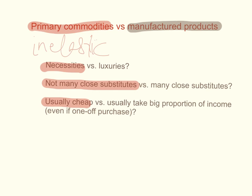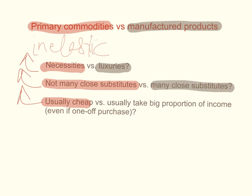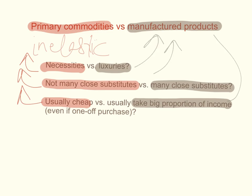All these contribute to the demand for primary commodities being rather inelastic. On the opposite end of the spectrum, manufactured products are often classed as luxuries. They often have many close substitutes — a laptop or an MP3 player, for example. And they usually take a big proportion of income, even if it's a one-time purchase. All of these reasons contribute to the demand for manufactured products being rather price elastic.